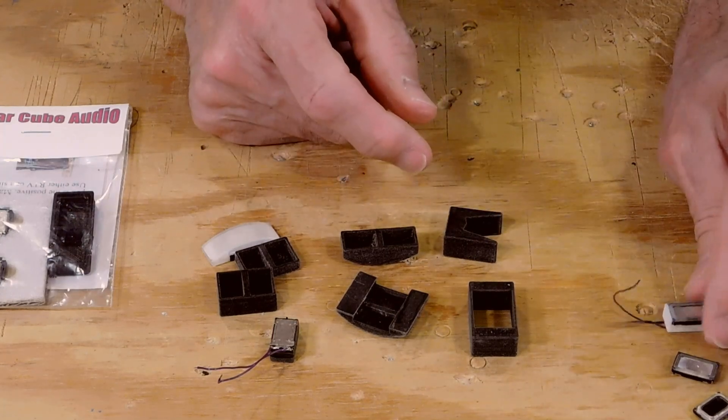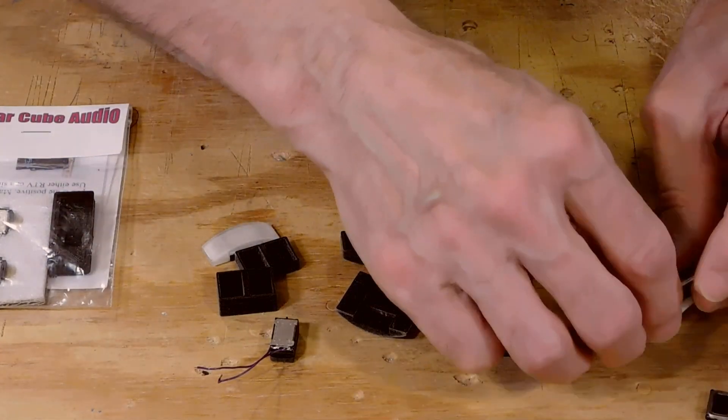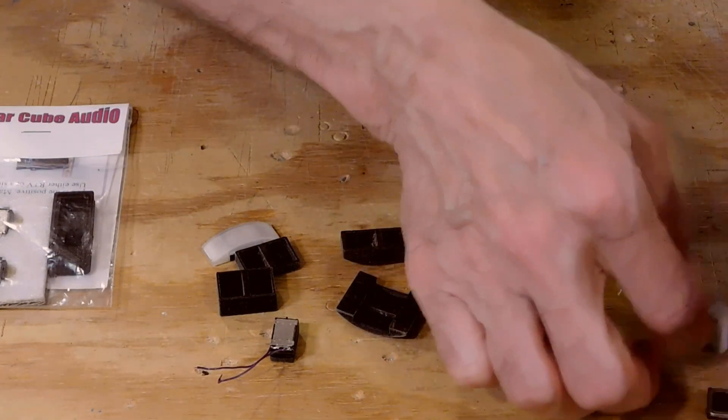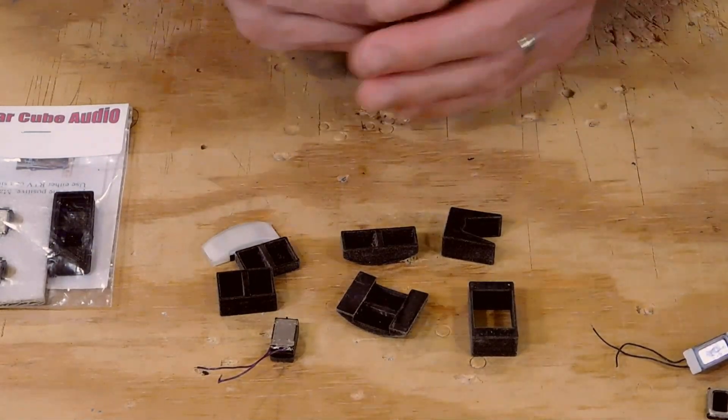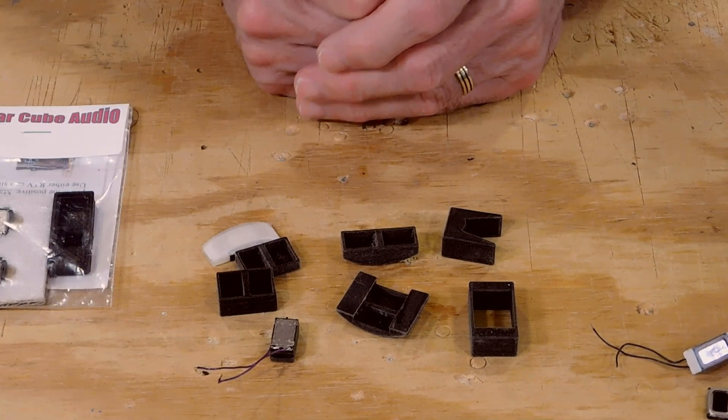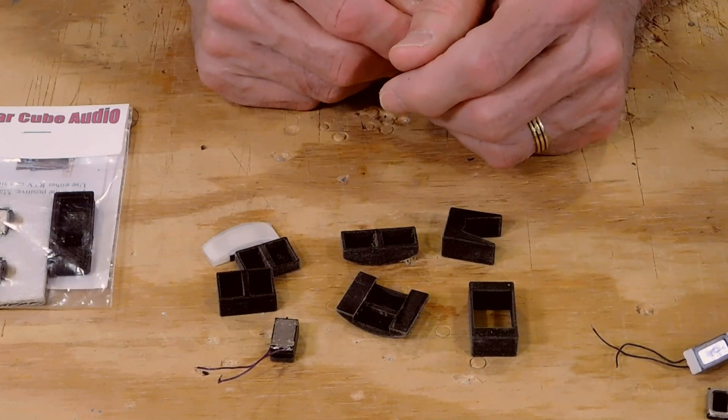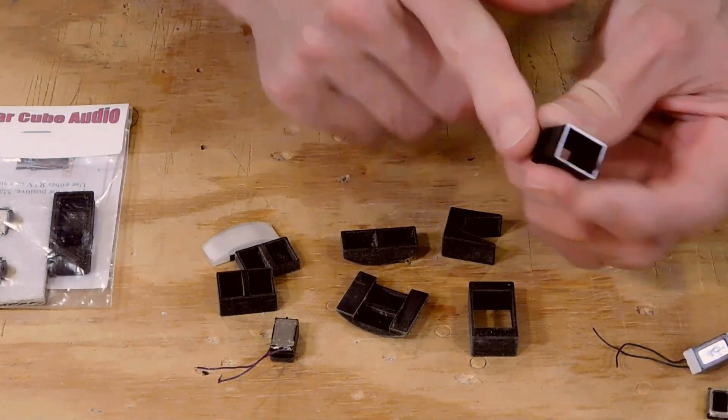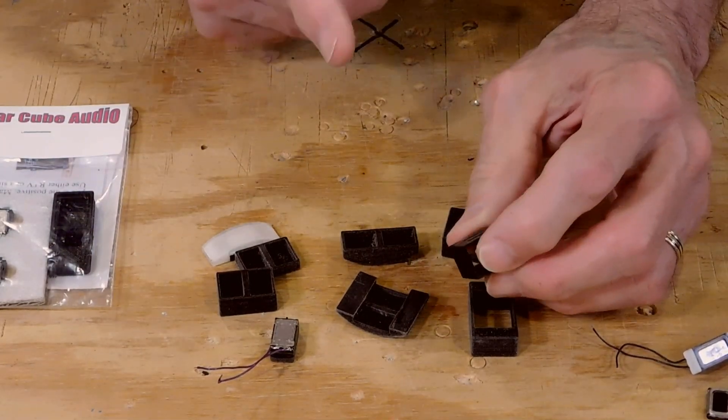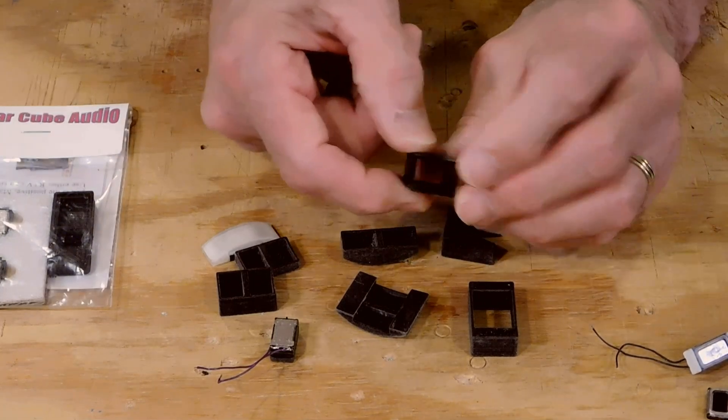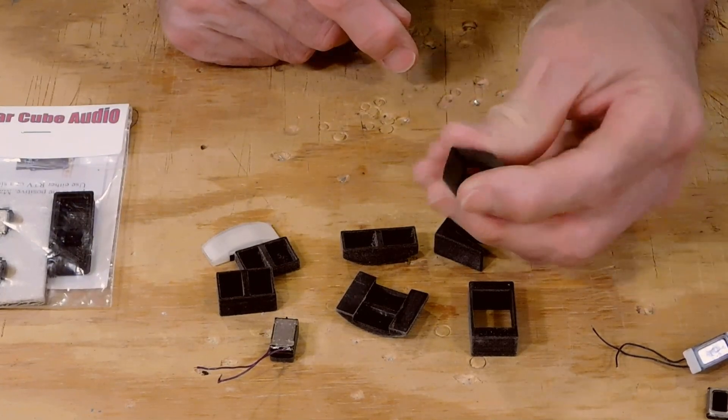Another company making these available recently is Soundtracks. They have come on board with their own versions. You can take a look at theirs on their website, and Soundtracks dealers would have them. I also want to mention that ESU Loksound is now making various combinations of stackable enclosures like this. They provide Sugarcube speakers with some of their decoders, and you can order them separately.